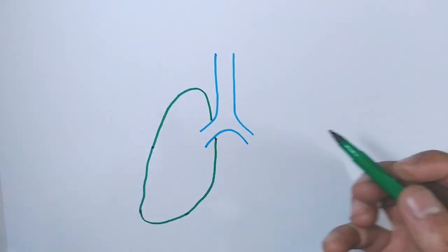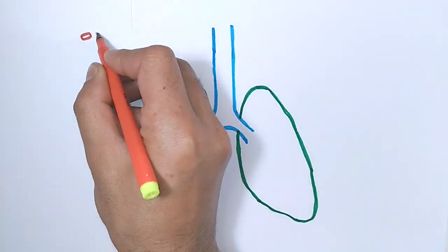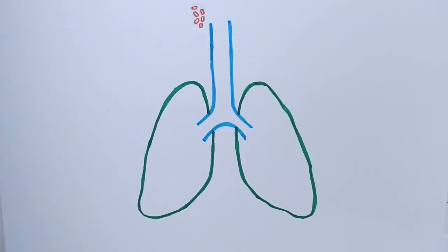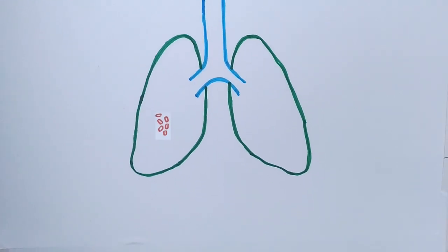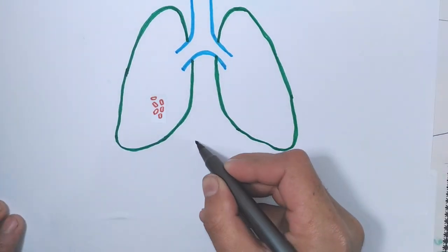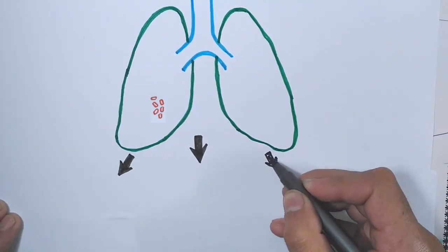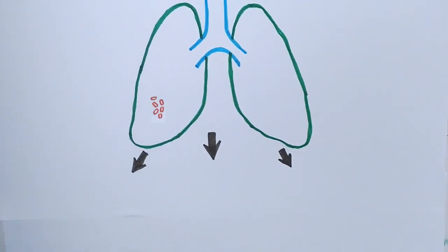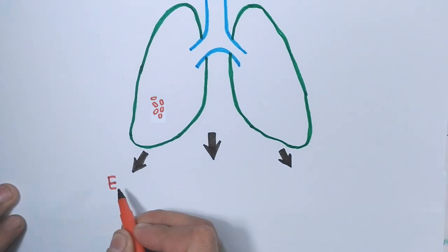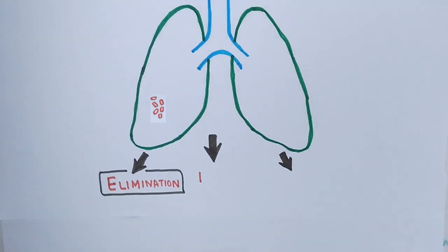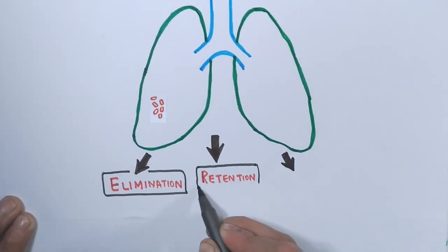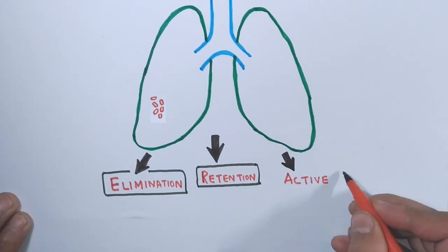Tuberculosis spreads through air, and Mycobacterium gets entry into the lungs and resides in the alveoli, where it starts its primary infection if the immune system fails to eliminate it. There are three case scenarios for Mycobacterium in the alveoli: the first one is elimination, the second one is retention, and the third one is active infection.